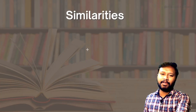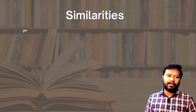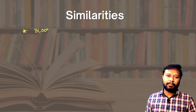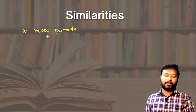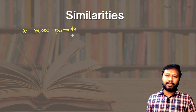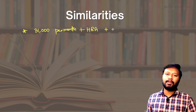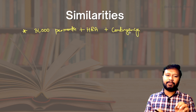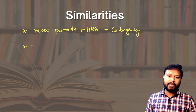Now let's talk about the similarities between both fellowships. The first similarity is the fellowship amount — both UGC JRF and CSIR JRF receive the same amount of 31,000 rupees per month. HRA is also the same, and the contingency amount is also similar. So all monetary benefits are actually the same for both fellowships.